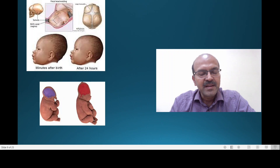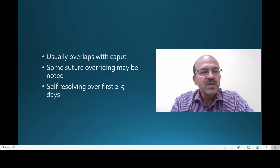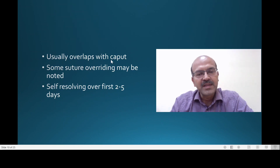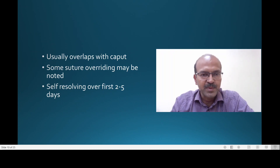Luckily, the brain is very flexible inside and can mold itself without any real problem. The molding usually overlaps with caput succedaneum, because the same process leads to some fluid seeping into the subcutaneous tissue of the scalp, appearing as a swelling.